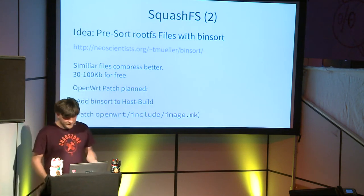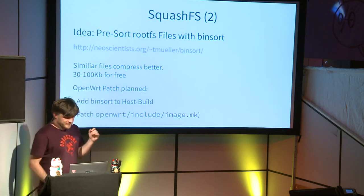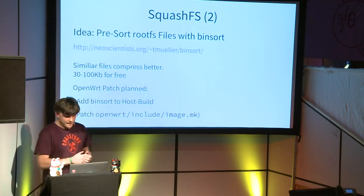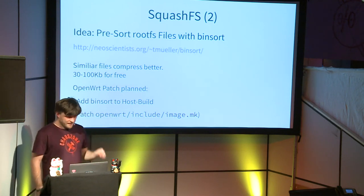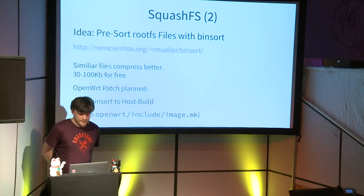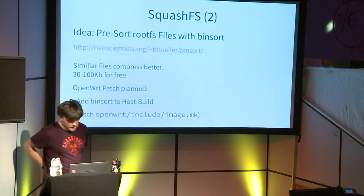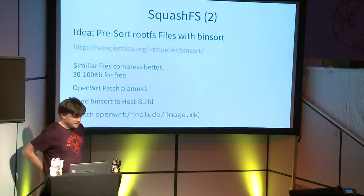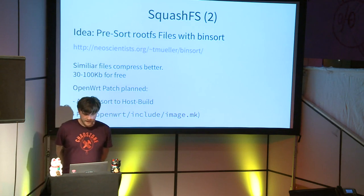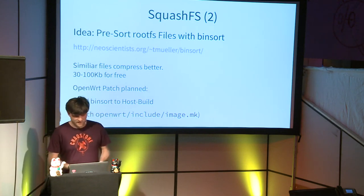Another idea with essentially no trade-offs: you can sort all the files in your root filesystem by similarity, because more similar files compress better together. There's a small C implementation called binsort that you can hack into the OpenWRT build system — I plan to submit a patch. On an image without any extra packages I got 35 kilobytes, and with more packages you can likely get up to 100 kilobytes for free, simply by exploiting better compression of similar files.